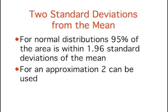For all normal distributions, 95% of the area is within 1.96 standard deviations of the mean. For quick approximations, it is sometimes useful to round off and use 2 rather than 1.96.